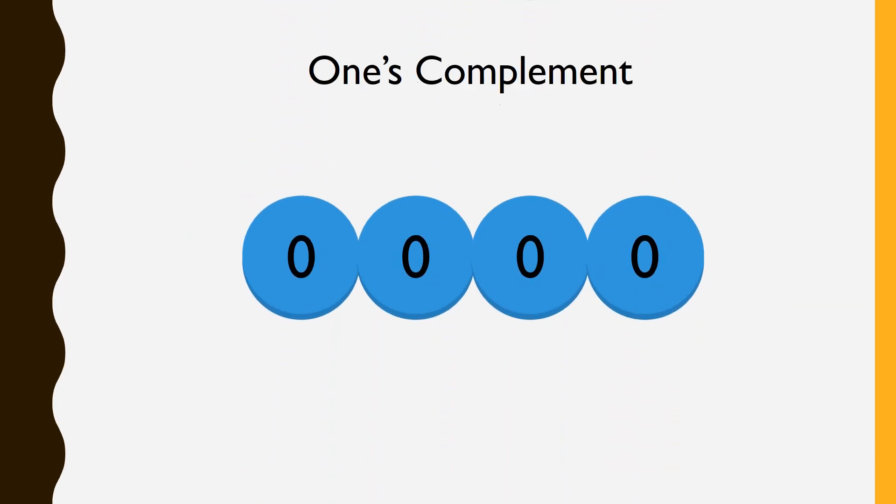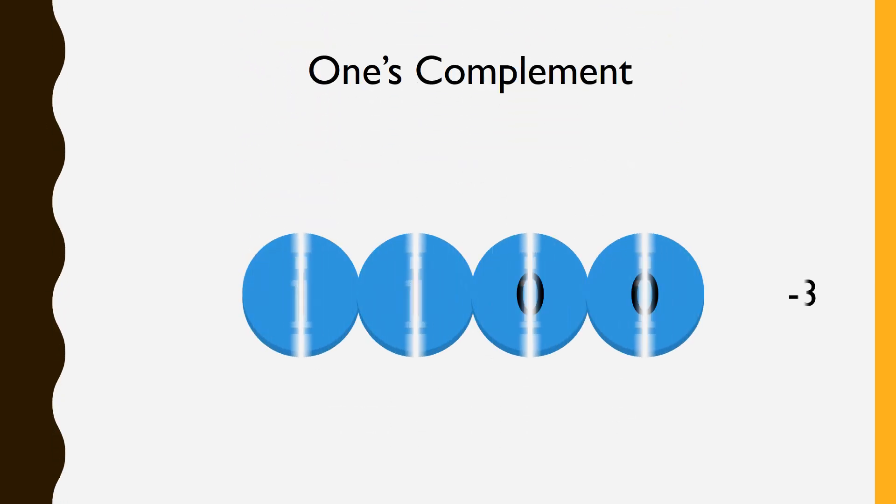1's complement takes a different approach to negative numbers. It also uses a signed bit at the beginning of a number, but does something else as well. To represent negative 3 in 1's complement, we flip the signed bit, then flip all bits following the signed bit. Negative 3 in 1's complement looks like negative 4 in signed magnitude, but we're using 1's complement so it is negative 3.